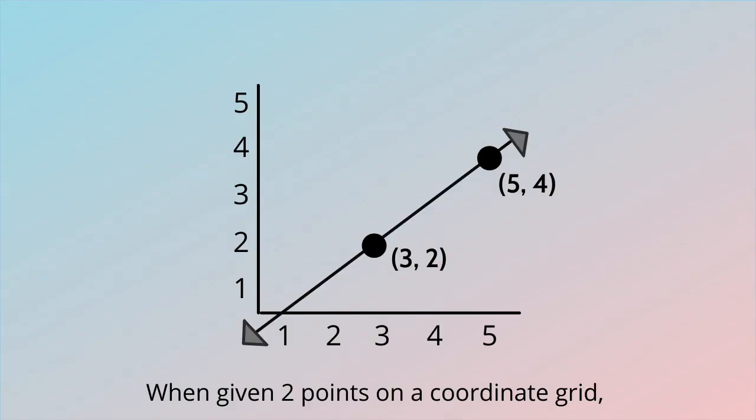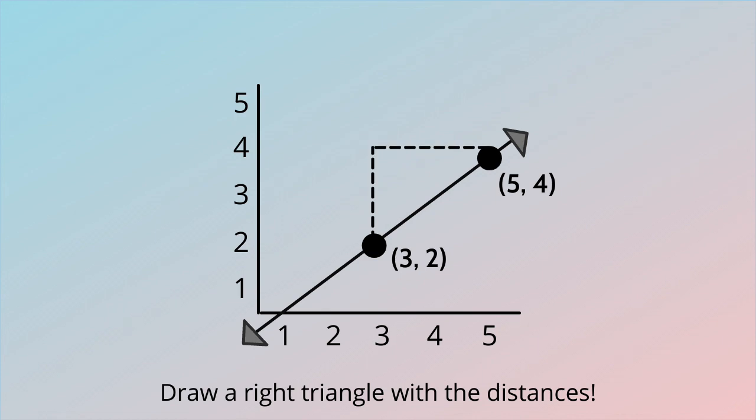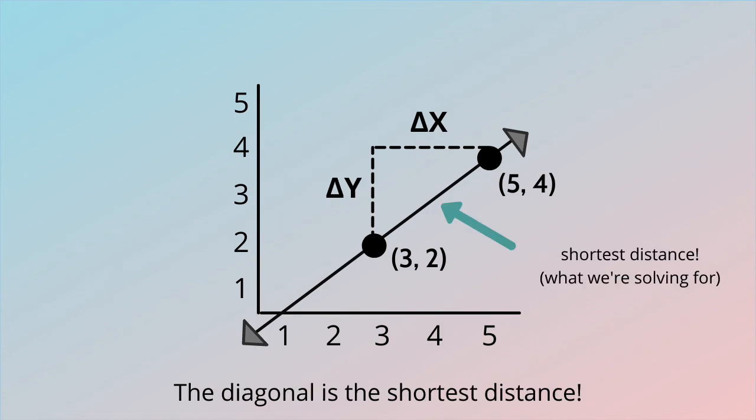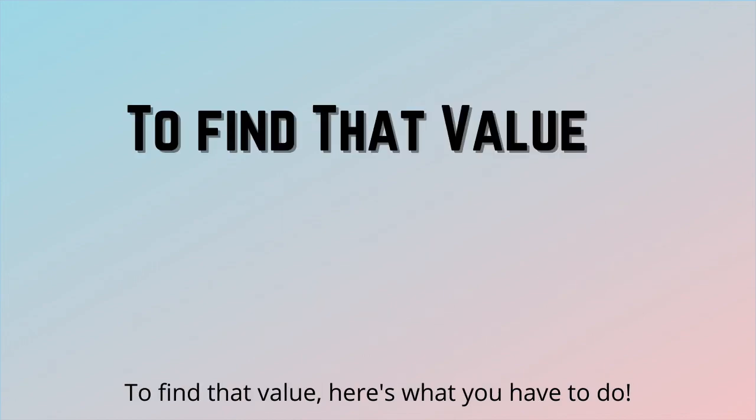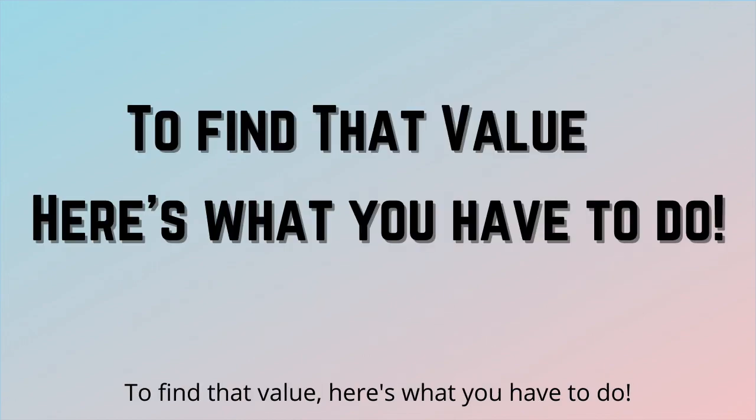When given two points on a coordinate grid, draw a right triangle with the distances. The changes in x and y are the legs. The diagonal is the shortest distance, to find that value here's what you have to do.